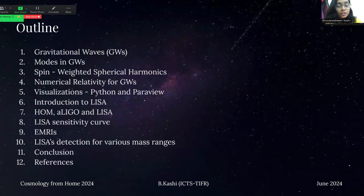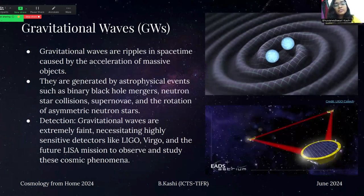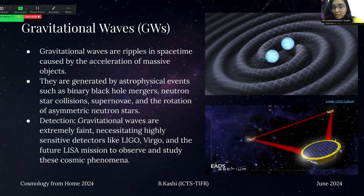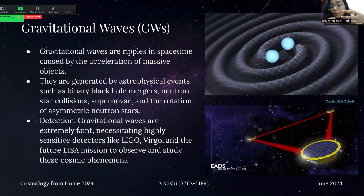This is the outline of the talk. Firstly, let's understand what gravitational waves are. Gravitational waves are ripples in spacetime and they're caused due to the acceleration of compact objects like neutron stars or black holes during events like mergers or collisions.